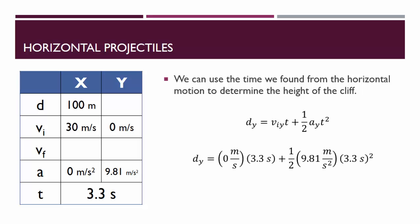If we plug in our initial velocity and our time and our acceleration, we find that the vertical displacement is 53.4 meters. This is otherwise known as the height of the cliff.